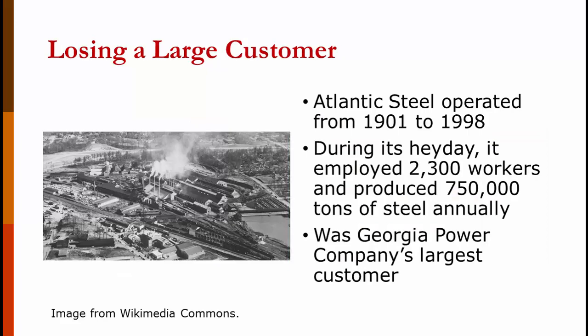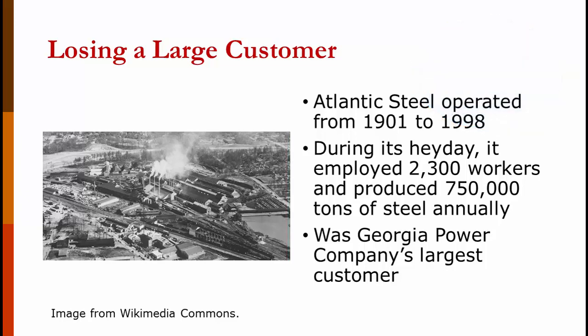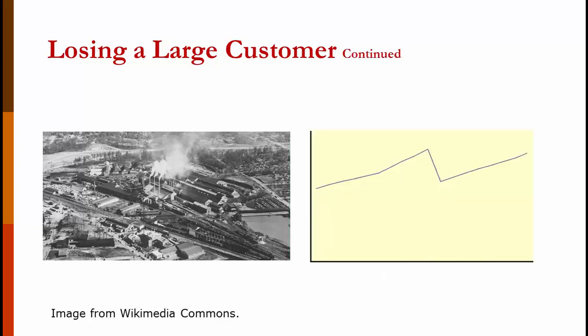What about losing a customer? On the outskirts of downtown Atlanta, there used to be a steel mill called Atlantic Steel. They operated from 1901 to 1998. During its heyday, it employed 2,300 workers and produced 750 tons of steel annually. When it was open, it was Georgia Power's single largest customer. And then it wasn't. It went bankrupt. You can see a chart on the screen where we had a drop in demand for electricity. It probably wasn't that large. I'm doing that so you can see it easily. Currently, that land has been reclaimed and there's an office building there. It doesn't use remotely the same amount of electricity as the steel mill did, so that demand is gone. If Georgia Power hadn't been ready for it, we'd have excess production. If that happened to a manufacturing company and they weren't ready for it, they'd build up a huge amount of extra inventory. Again, marketing knew that was coming and we were able to build that into our plans. And that's why forecasting is in the marketing department.